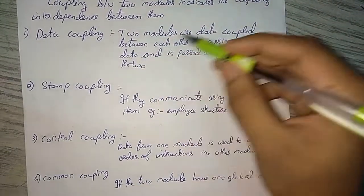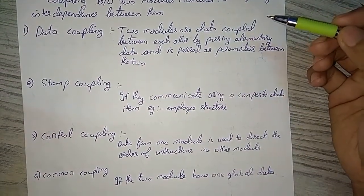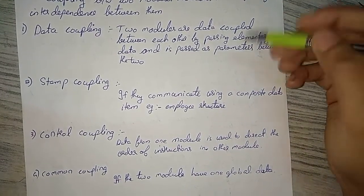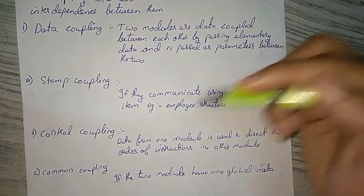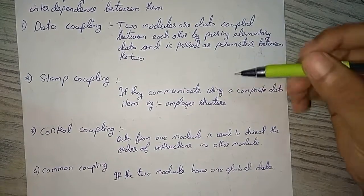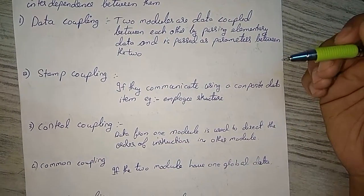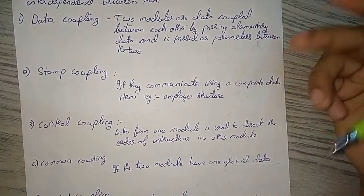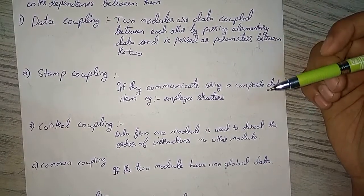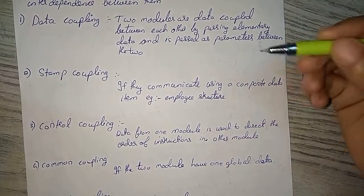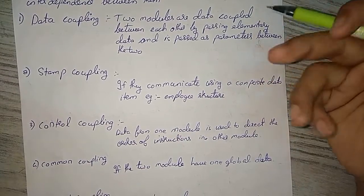In stamp coupling, we pass a structure of data. That means we pass an array, we pass a predefined structure like class, etc.